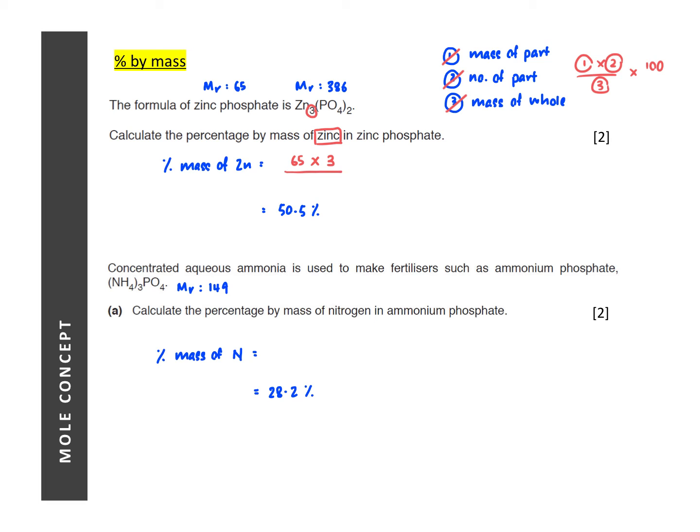So divided by the mass of whole, which is the mass of your zinc phosphate, 386, and we multiply it by 100 to get 50.5.